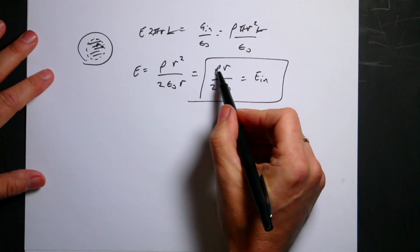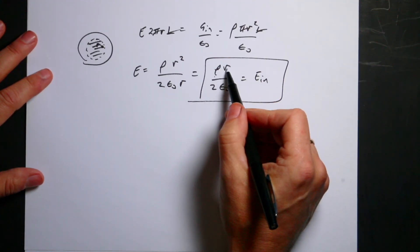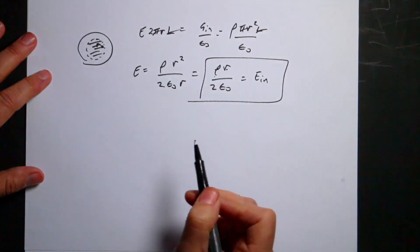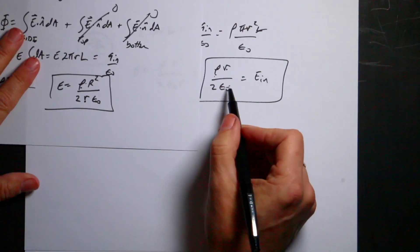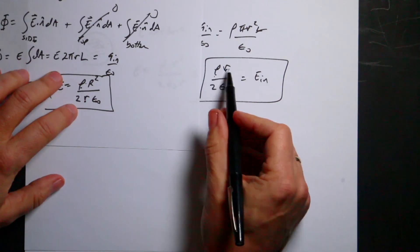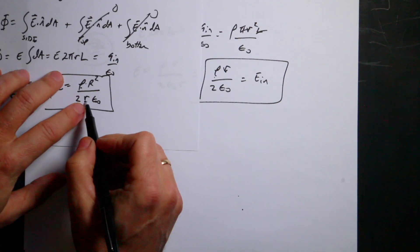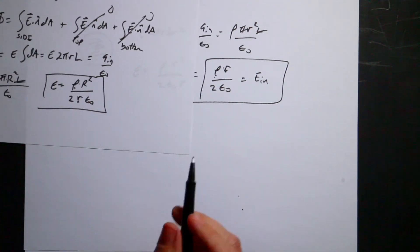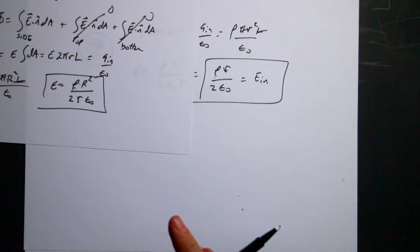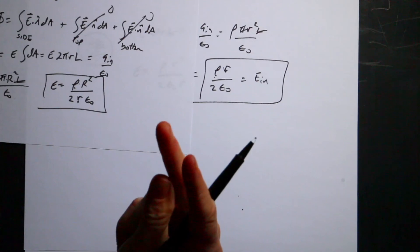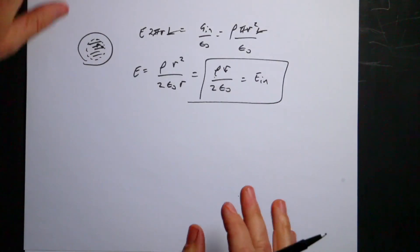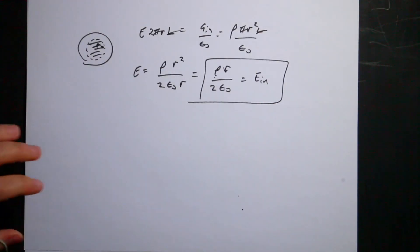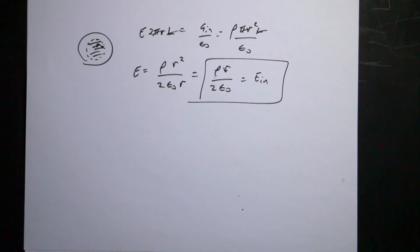Units check again: coulombs per meter cubed times meters gives coulombs per meter squared divided by epsilon naught — same units as the electric field due to a point charge. And do these two values agree at the boundary? If little r equals big R, the inside expression gives rho*R over 2*epsilon naught, and the outside expression gives the same thing. So that's good. That's the electric field due to an infinitely charged rod — though we did cheat by already knowing the direction and symmetry.